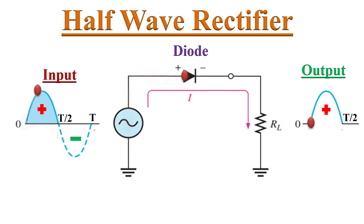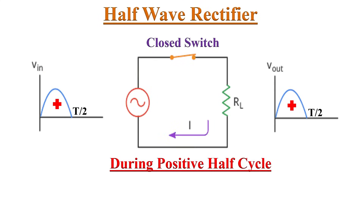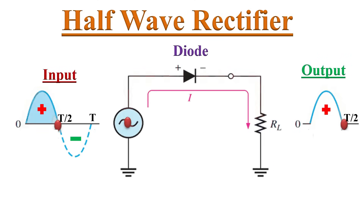Whenever alternating voltage is applied across this circuit, during the positive half-cycle of AC input the diode is forward biased, as the anode is positive with respect to the cathode. So the diode acts as a closed switch and the positive half-cycles will appear across the load resistor.